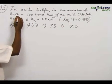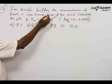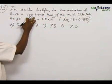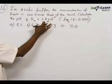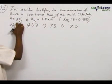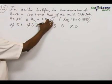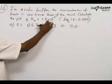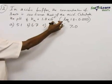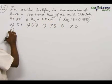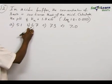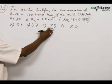Problem number 12. In an acidic buffer, the concentration of salt is 100 times that of the acid. Calculate the pH if Ka is 1.8 × 10^-5. Here the log value of 1.8 is given, that is 0.2553. Options are 5.1, 6.7, 7.3, and 7.0.